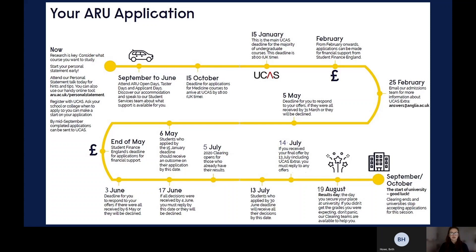On screen we have our application to ARU slides, just pointing out some really important key dates. There are dates on the 15th of October and the 15th of January — these are the UCAS deadline dates.